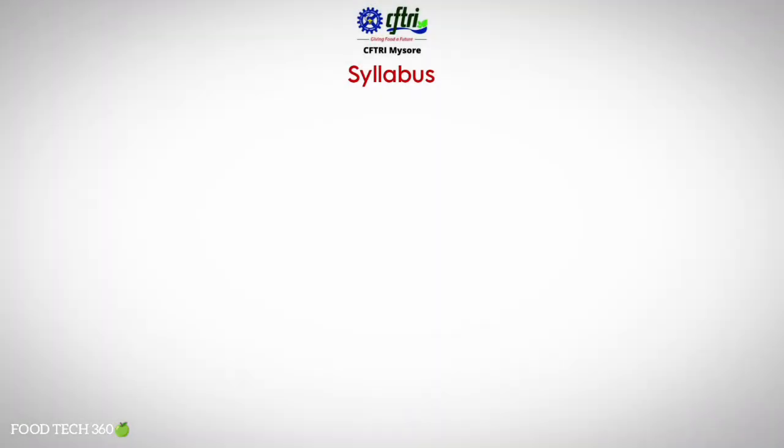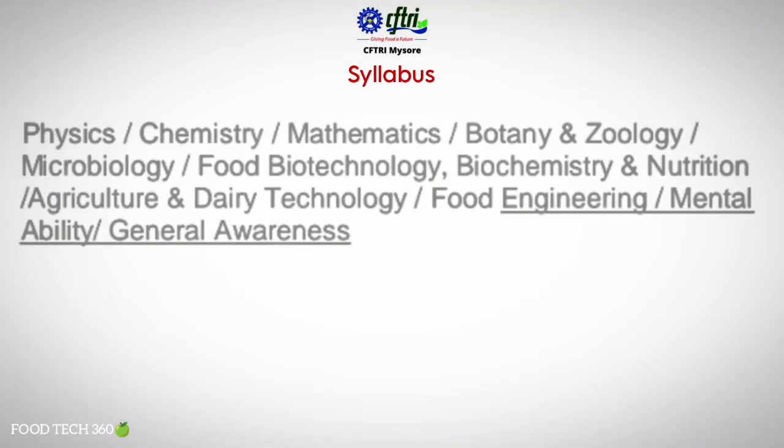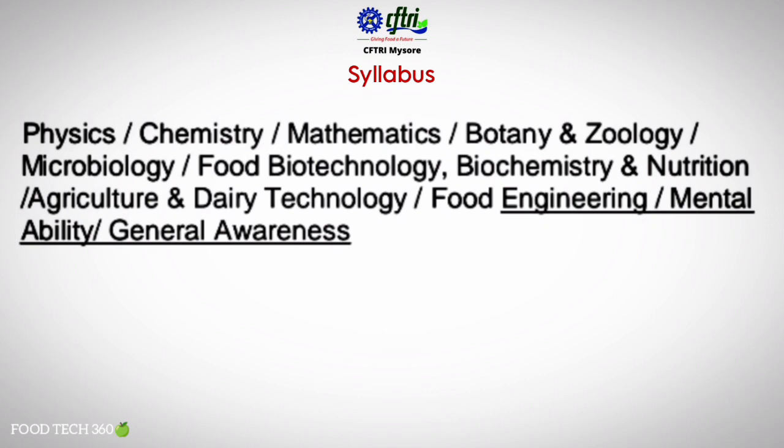First, let's look at the syllabus for the entrance exam. This syllabus consists of 10 units: physics, chemistry, mathematics, botany and zoology, microbiology, food biotechnology, biochemistry and nutrition, agriculture and dairy technology, food engineering, mental ability, and finally general awareness on health and wellness. It is clear that the CFTRI syllabus has touched topics from almost all regular degree courses.